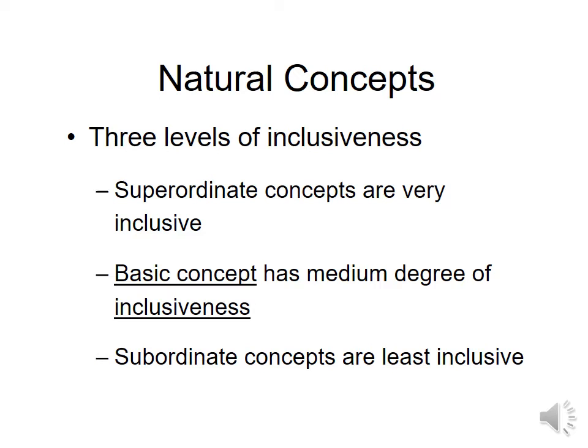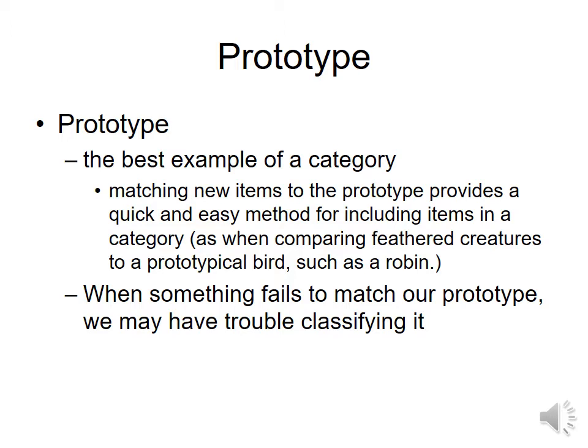A prototype is the best example of a category. If I asked you to name the first type of bird that comes to mind, most people would say something familiar — a robin, a cardinal, a bluebird, a goose. Something you see constantly. We typically think of a bird that can fly, has feathers, maybe sings a song or fishes.